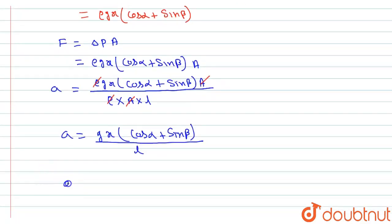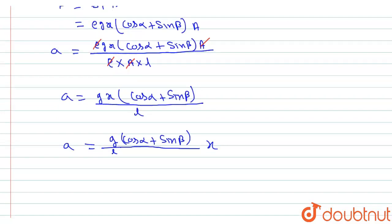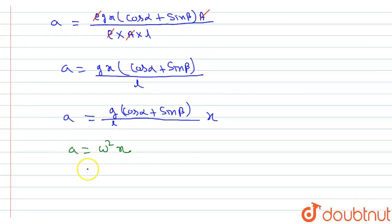This can be written as a = [g(cosα + sinβ)/L] × X. Comparing with the SHM equation a = ω²X, we get ω² = g(cosα + sinβ)/L, so ω = √[g(cosα + sinβ)/L].